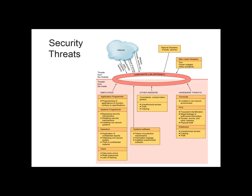Whether external or internal, threats fall into five categories: unintentional acts such as human errors, natural disasters, technical failures with software or hardware, management failures, and deliberate acts. We will go over these threats as we continue.